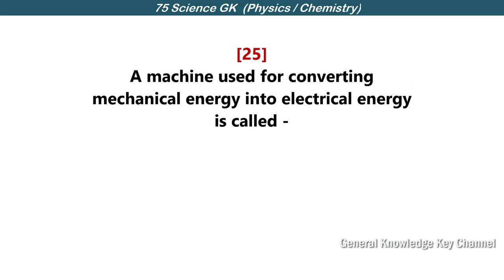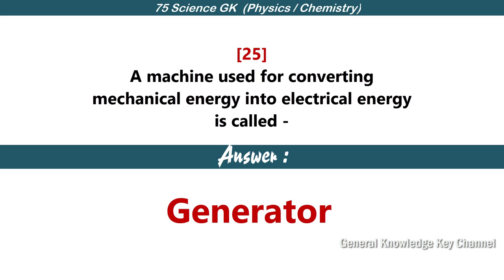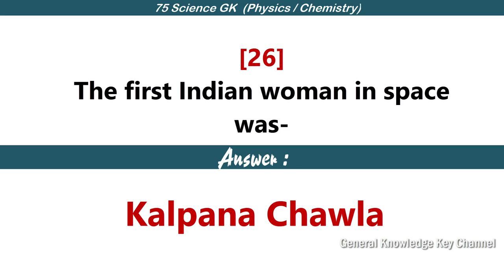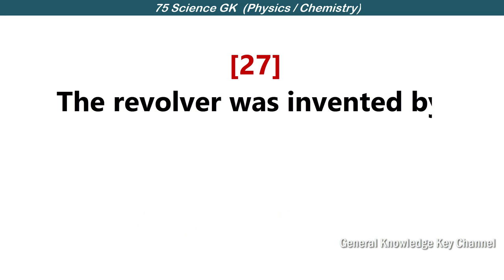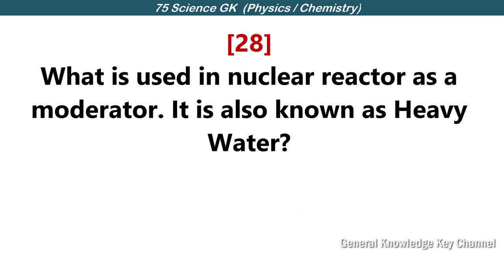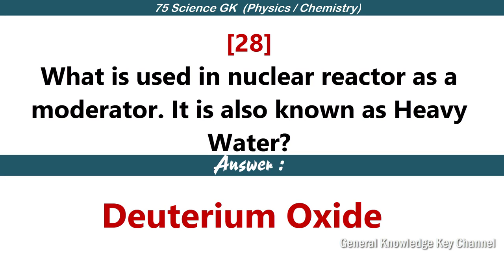A machine used for converting mechanical energy into electrical energy is called a generator. The first Indian woman in space was Kalpana Chawla. The revolver was invented by Samuel Colt. What is used in a nuclear reactor as a moderator? It is also known as heavy water — deuterium oxide.